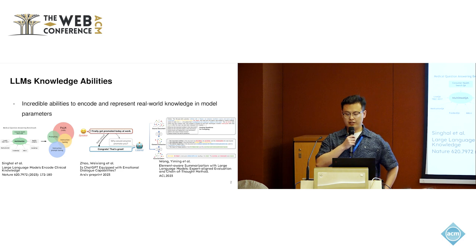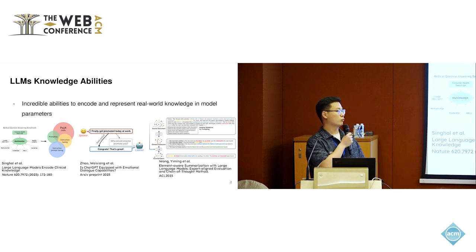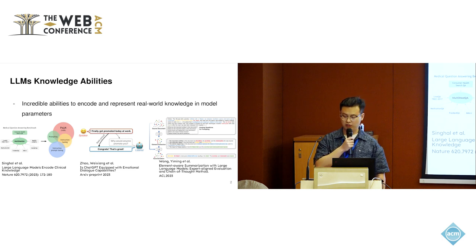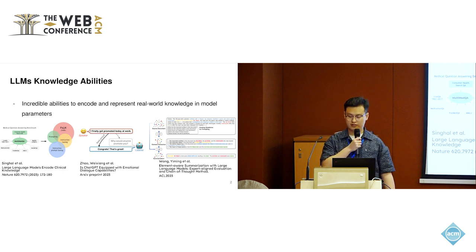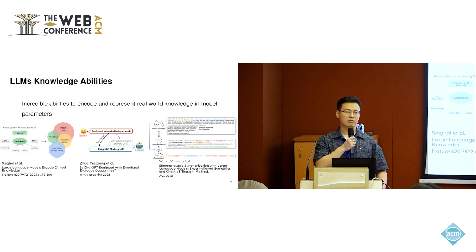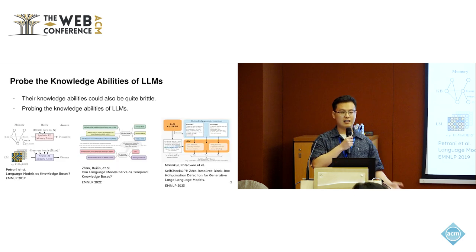As we venture further into artificial intelligence, we are usually amazed by how much these large language models seem to know. They have demonstrated great capability to encode real-world knowledge into their parameters. But many people find that their knowledge abilities could be quite brittle, as they could generate hallucinated information or struggle to encode long-tail facts.